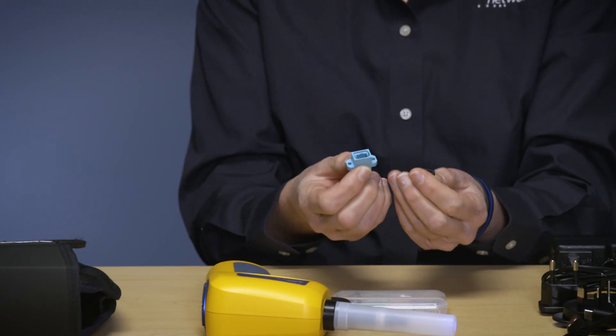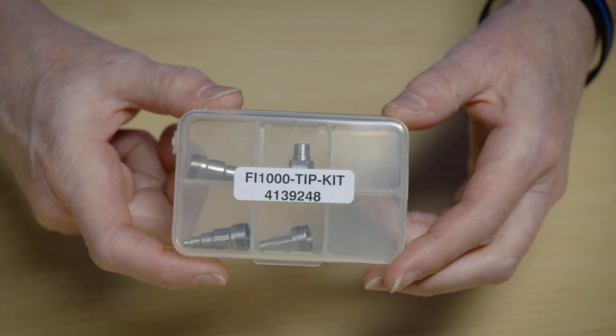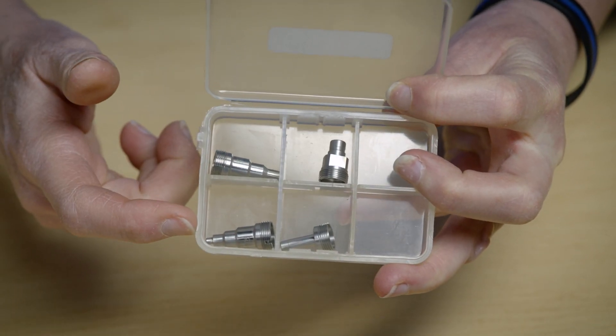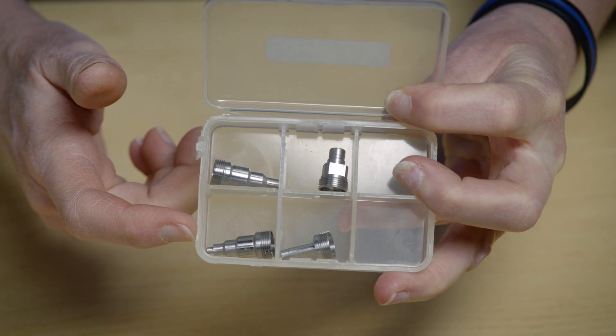We also have an optional set of single fiber tips that gives you both a 1.25 and 2.5 patch cord and bulkhead tip set.